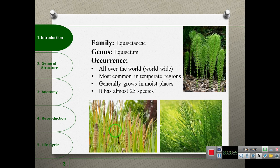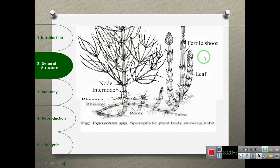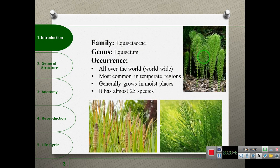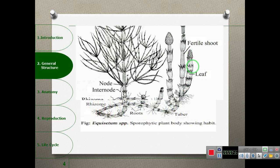This Equisetum is also called Horse Tail. Why is it called Horse Tail? You can see it on the screen. The shape resembles a horse's tail. The sporophytic stem is called a formal stem with doubly-branched aerial structures.